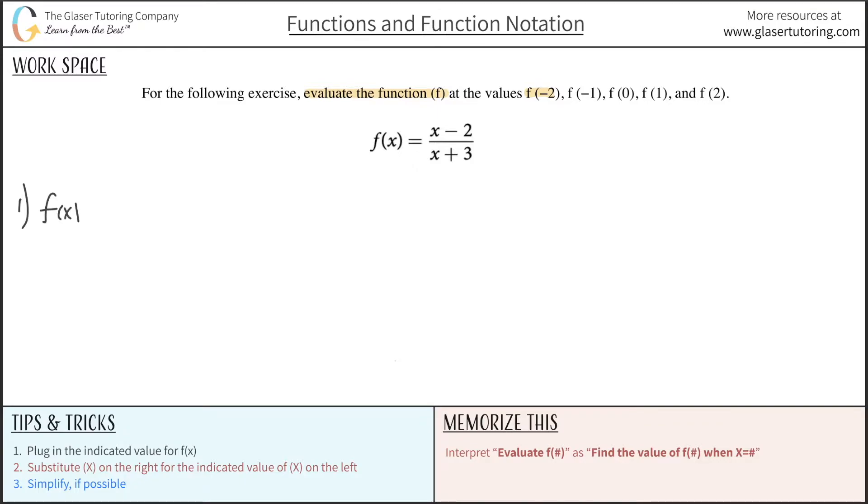I'm going to rewrite this: f(x) equals x minus 2 all over x plus 3. The first thing is to plug in the indicated f(x) value. They want me to find f(-2), so anywhere I have an x on the right-hand side, I'm going to plug in the value of negative 2.